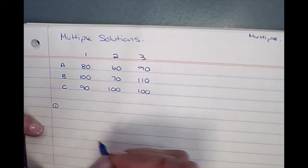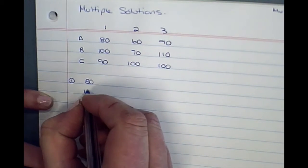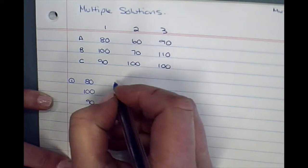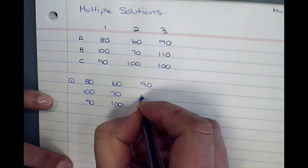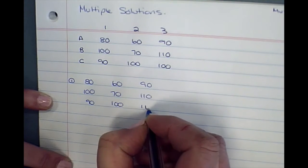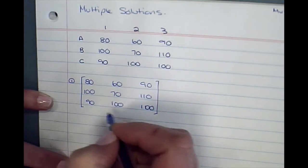Step number one, write out our cost algorithm. So it will be 80, 100, 90, 60, 70. Make sure you copy the numbers down properly.